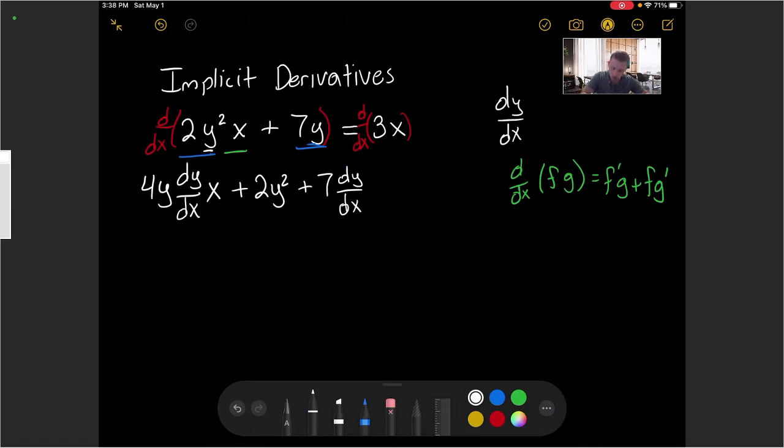And then finally on the right side of this equation, the derivative of 3x with respect to x will just be the constant of 3. So we've taken the derivative with respect to x of both sides of this equation.